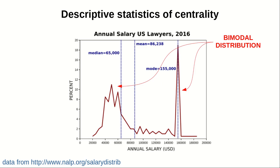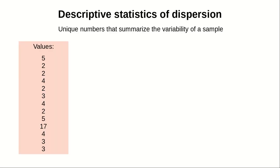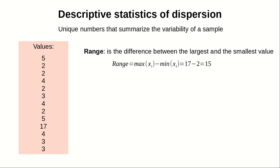But how about dispersion? What do I mean by dispersion? Well, you can see that different populations may have the same mean, but actually the data around the mean is distributed differently. So that's why we need something called statistics of dispersion. These are unique numbers that summarize the variability of a sample. For instance, we can simply compute the range.